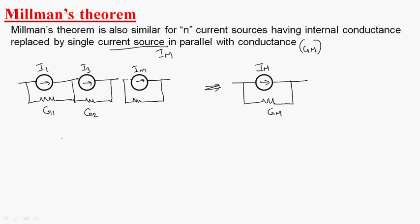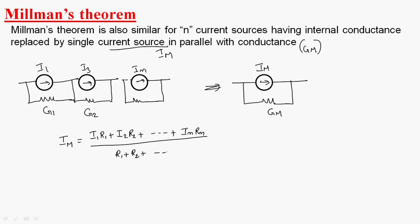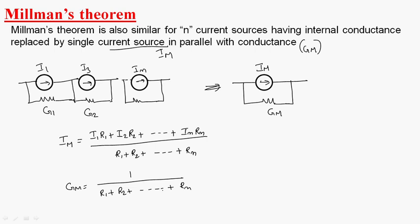What about Im? Im is equal to (I1·R1 + I2·R2 + ... + In·Rn) divided by (R1 + R2 + ... + Rn). And Gm is equal to 1 divided by (R1 + R2 + ... + Rn).